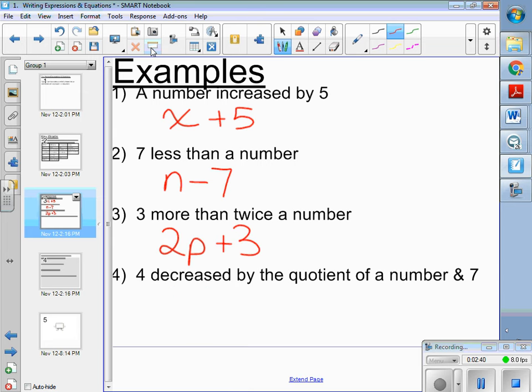And finally, we have four decreased by the quotient of a number and seven. So when you've got this 'and,' it goes in the order that it's listed. The quotient of a number and seven.